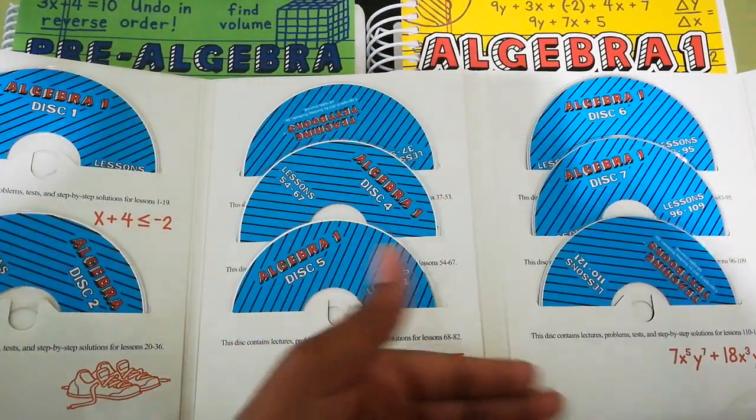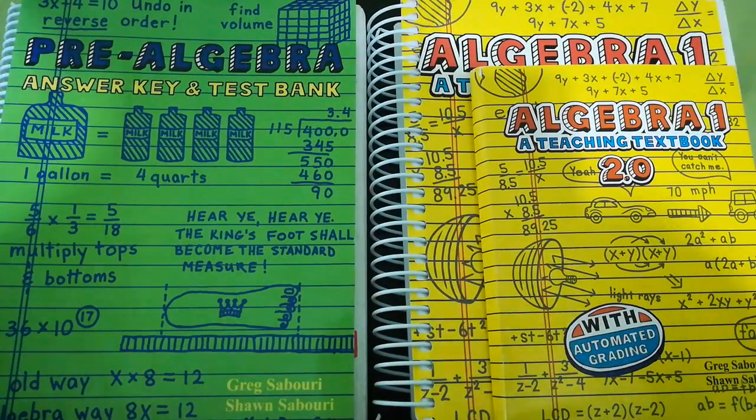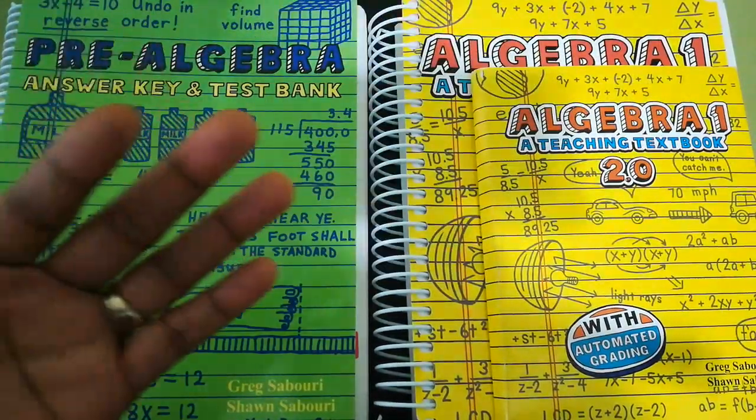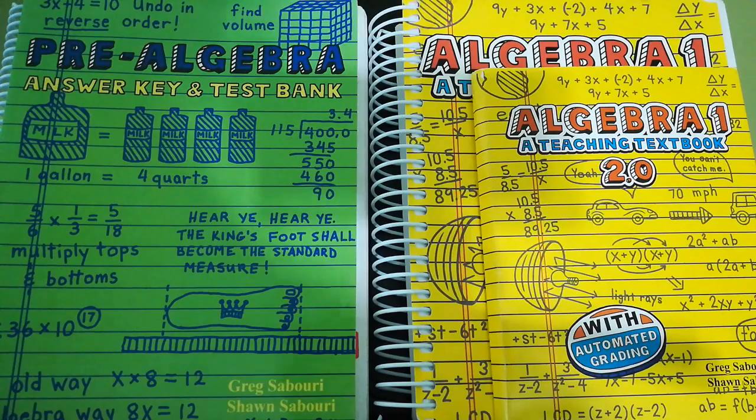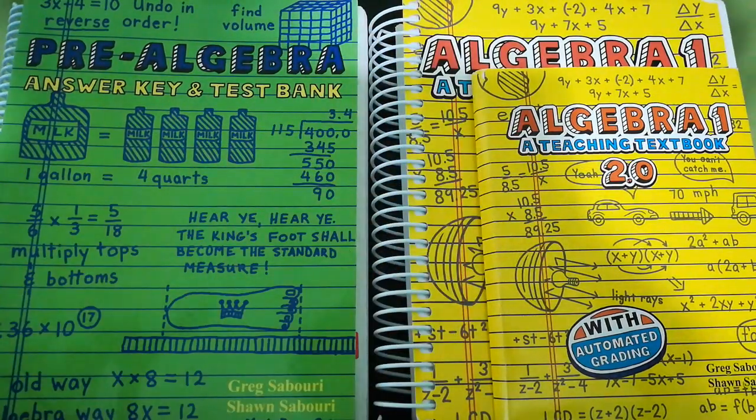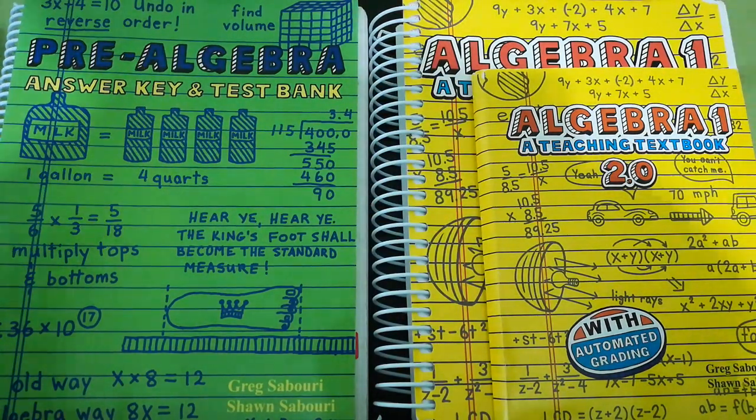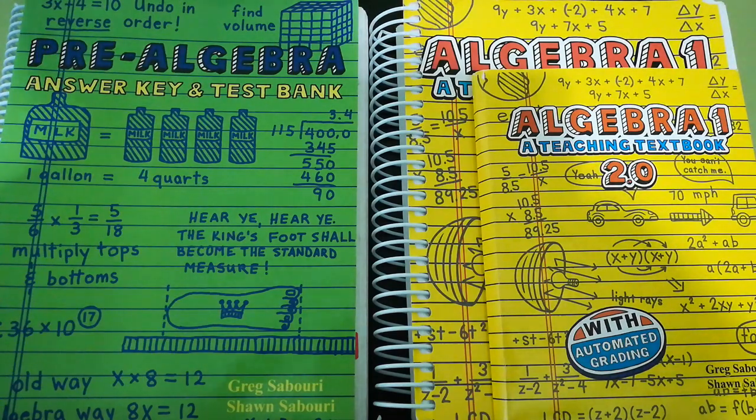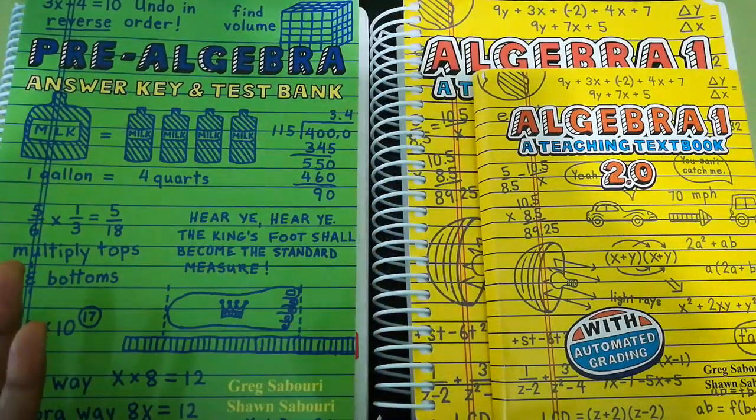Also, you can actually work online and offline with these disks. Another thing is that these Teaching Textbooks is an investment, in my personal opinion, because once you get to the higher grades, it's more pricey. Once you buy this and you keep it in good condition, you can resell it and it still has a high turnover resale value. So say for example, you spend $150 on this. You can actually sell it for $100 and individuals are looking for it. So if you're looking for curriculum that's also going to be an investment that can put money back into your homeschool or back into your business, this will be very, very good for you.